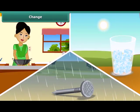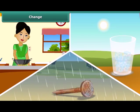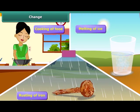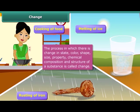We observe many changes. Some examples of changes in our daily life are: cooking of food, rusting of iron, and melting of ice. Change is a process in which properties like state, color, shape, size, chemical composition, and structure of a substance are altered.